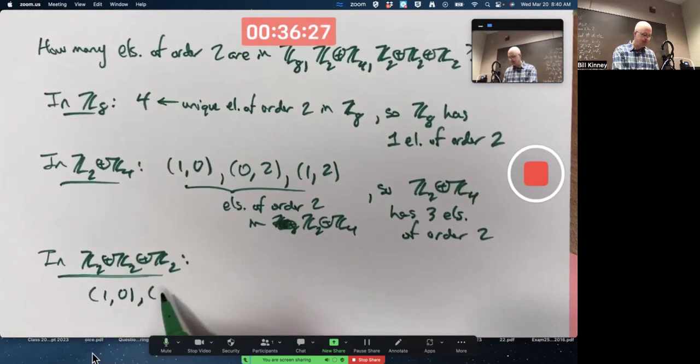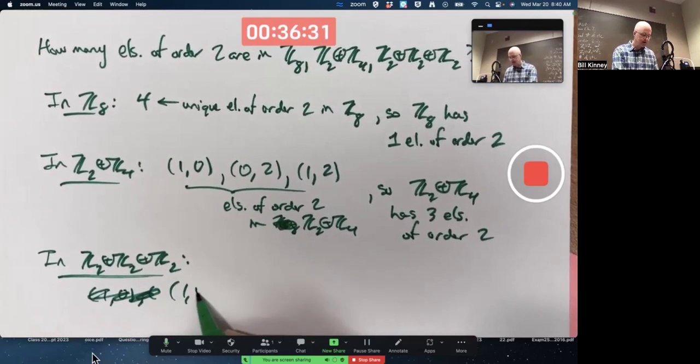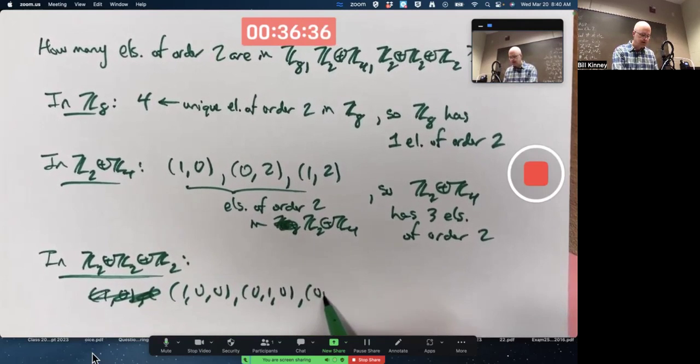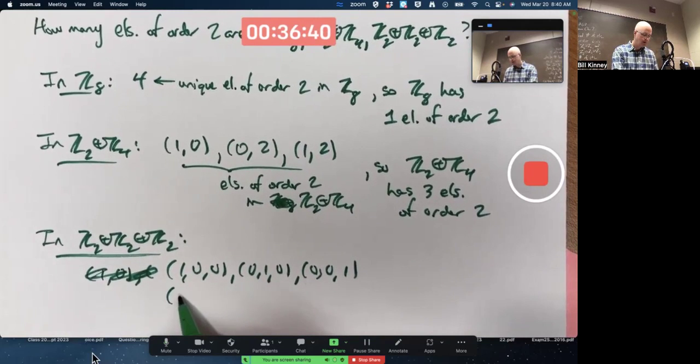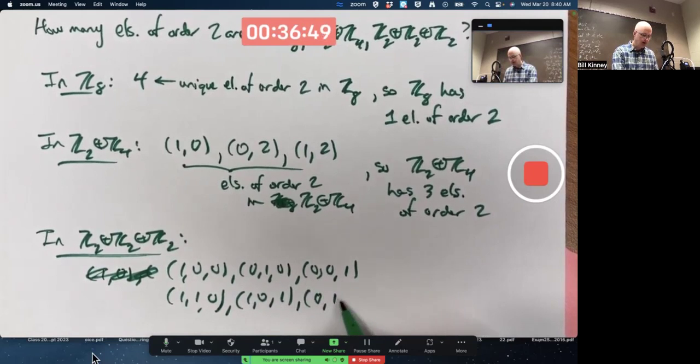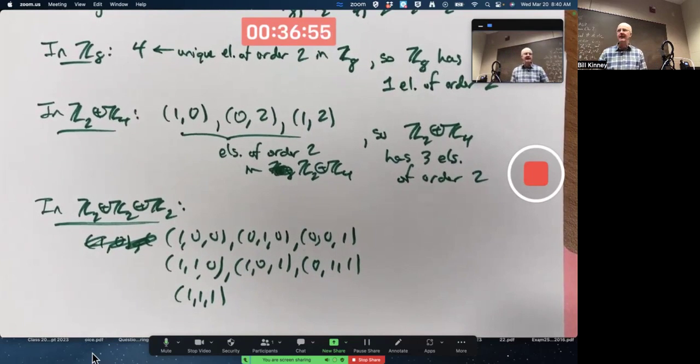One, zero. One, zero. But you need three components. One, zero, zero. Zero, one, zero. Zero, zero, one. One, one, zero. One, zero, one. Zero, one, one.